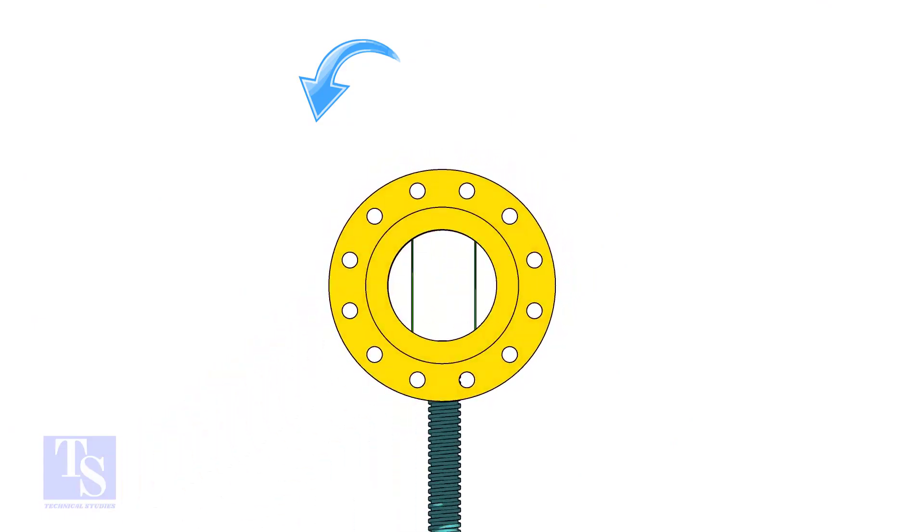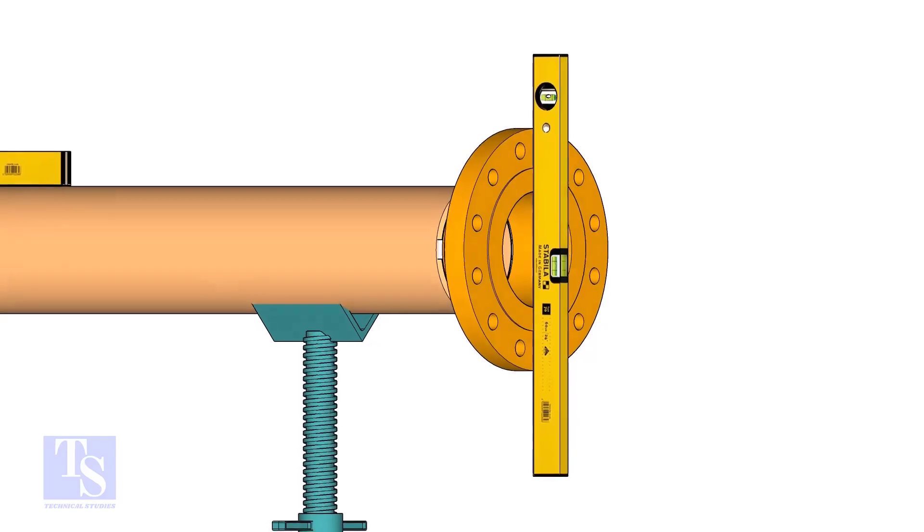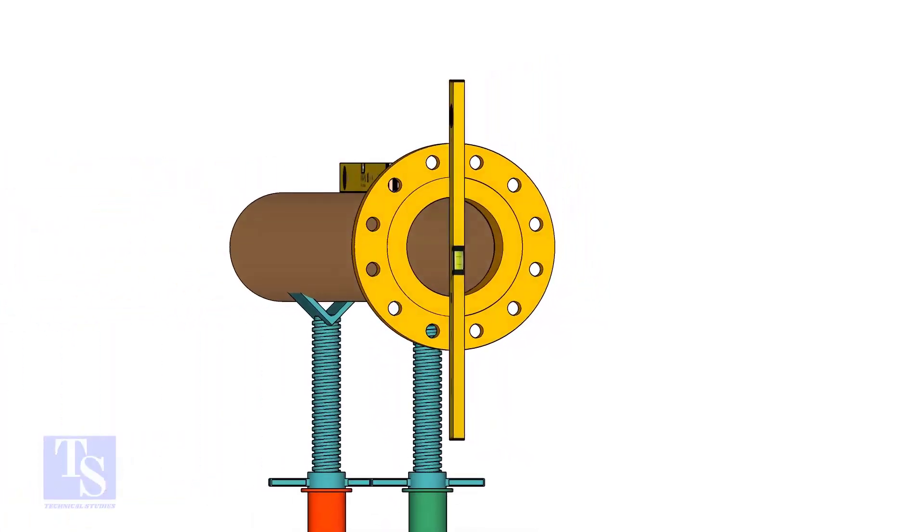Rotate the pipe and flange 90 degrees to either side. Check the vertical level of the flange. If correct, TAC weld on the top side of the joint.